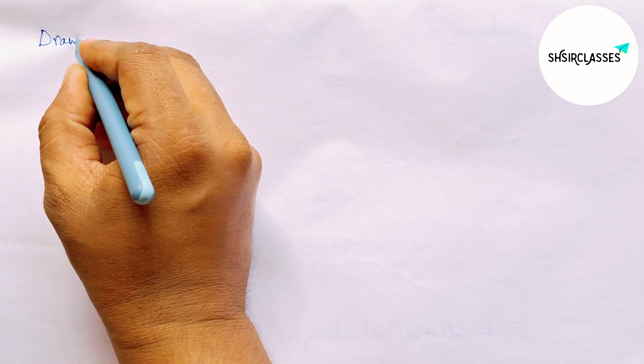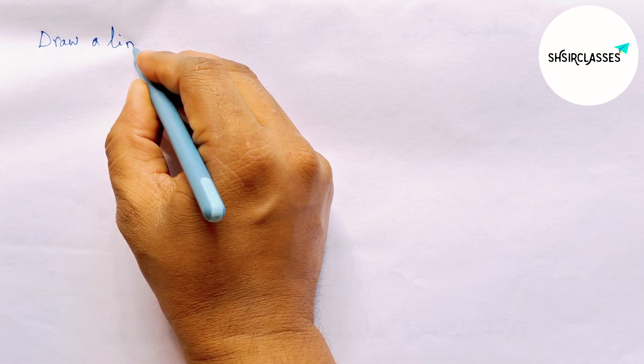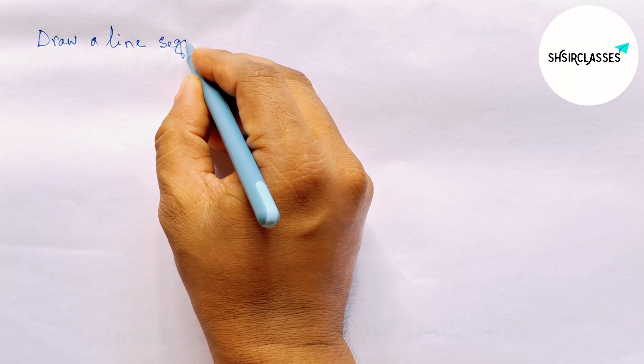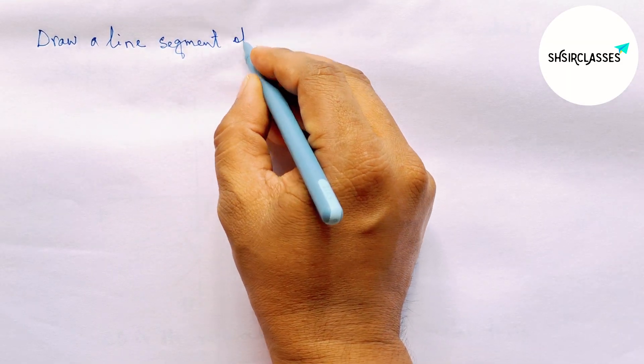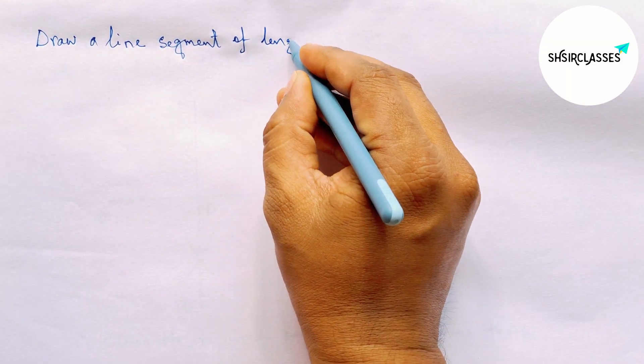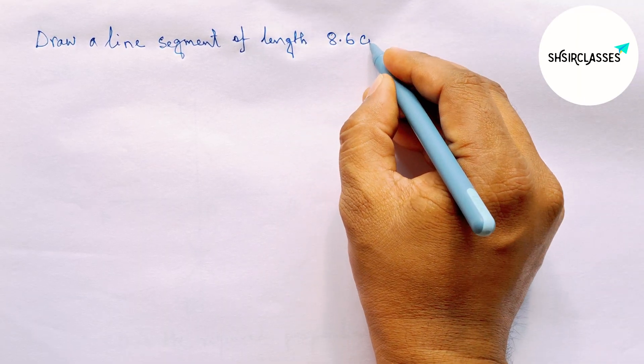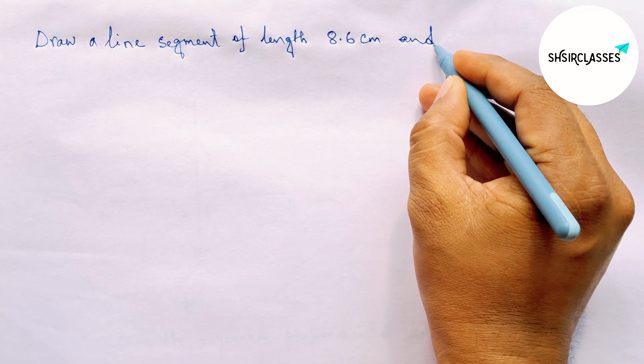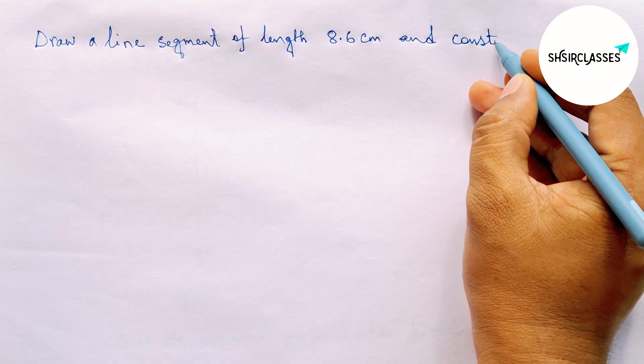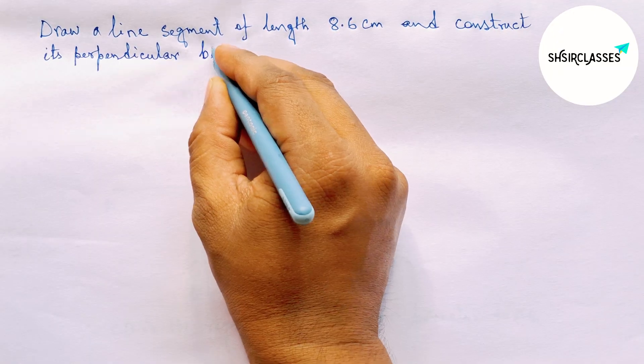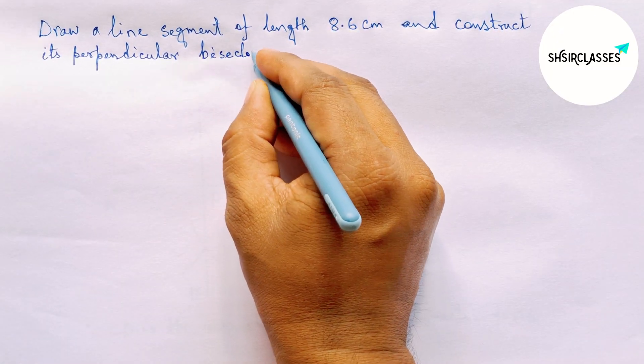Hi everyone, welcome to Say Share Classes. Today in this video, draw a line segment of length 8.6 centimeters and construct its perpendicular bisector to the given line in an easy way. So watch the video till the end.